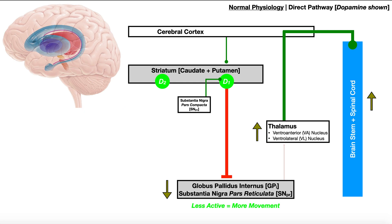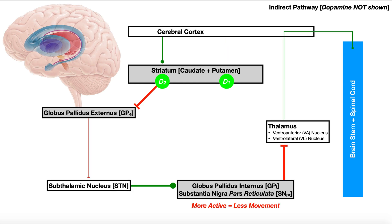Now let's look at the indirect pathway — dopamine and the substantia nigra are not shown yet, so let's understand this first. By itself, the indirect pathway is going to inhibit movement, or it's going to suppress unwanted movement. So you're sitting in your chair right now watching this video and your arms aren't flailing around — you're just sitting statically. Those movements like flailing your arms and legs are not happening because they're being suppressed. So the indirect pathway is always suppressing unwanted movement.